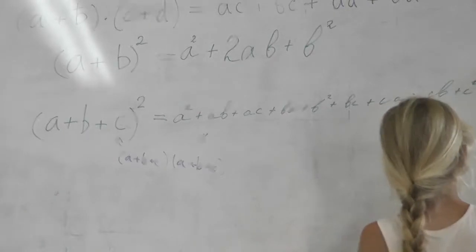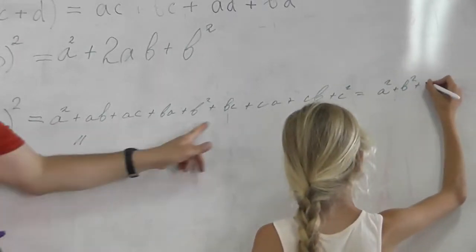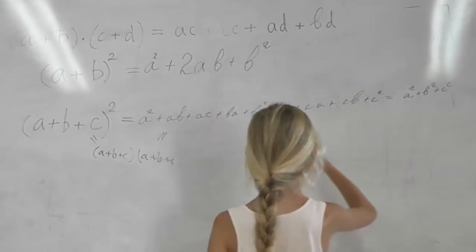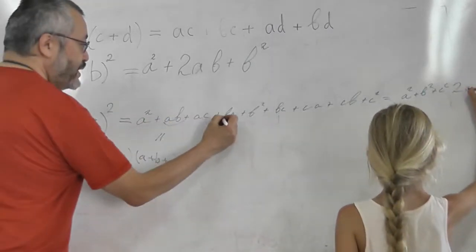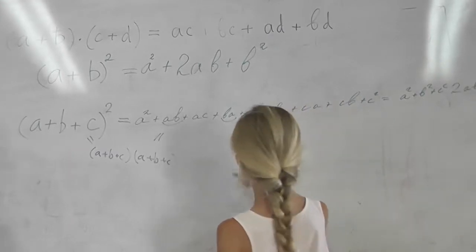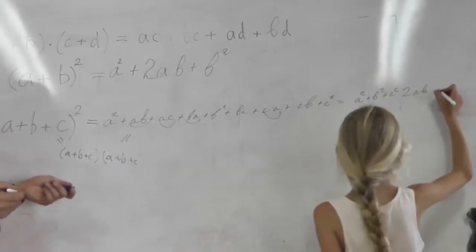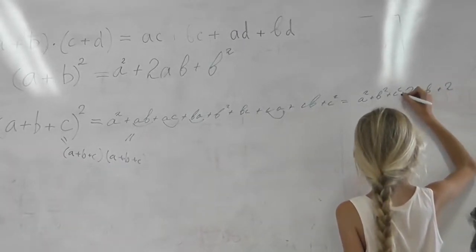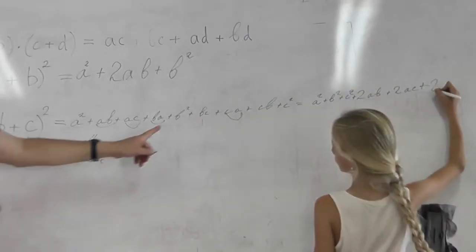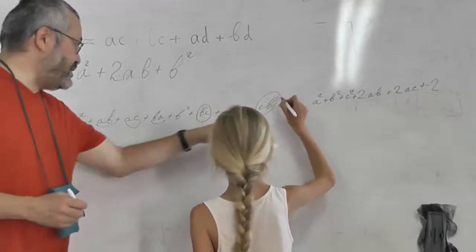And so we see now that there are squares: a², b², and c². And some of them are the same. ab and ba is actually the same. 2ab plus 2ac plus something which is missing. This and this. bc plus cb. 2bc.